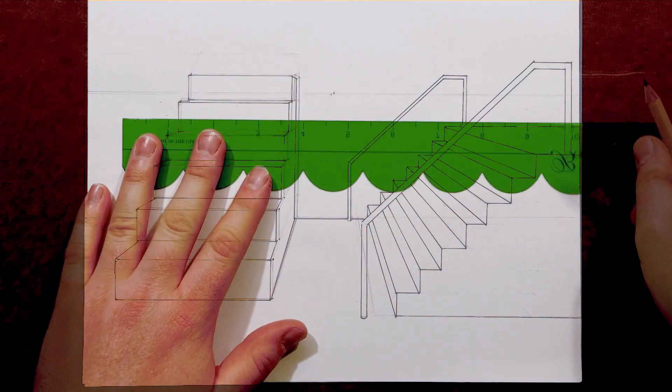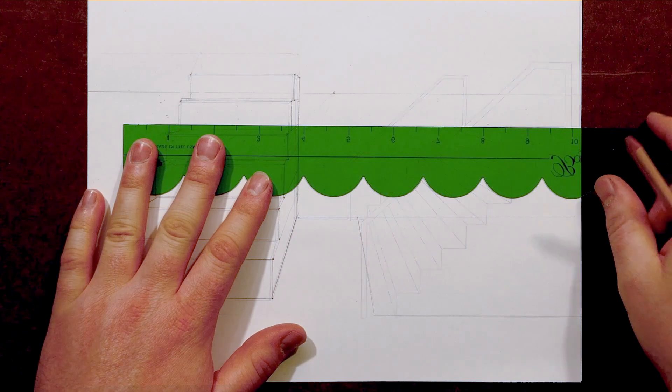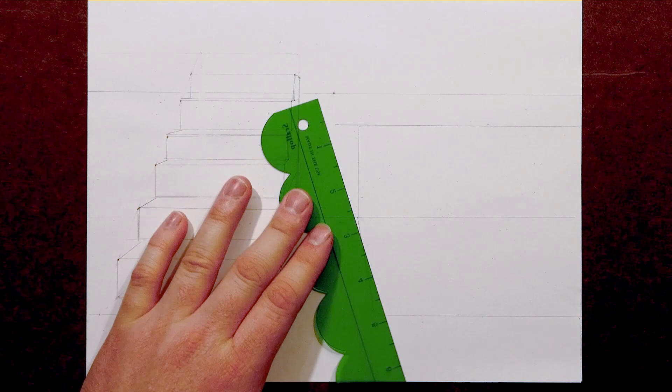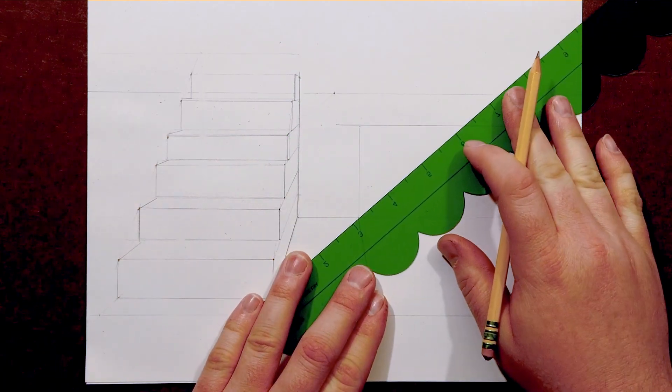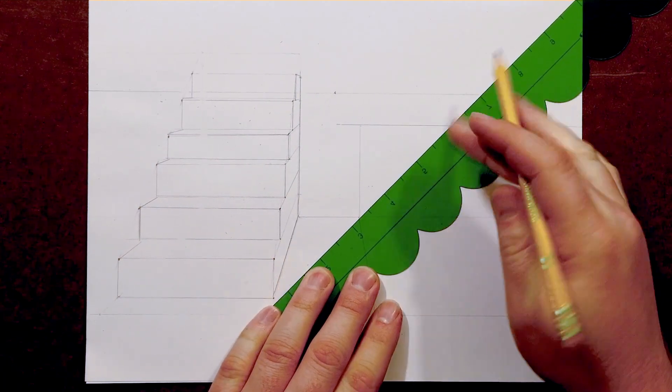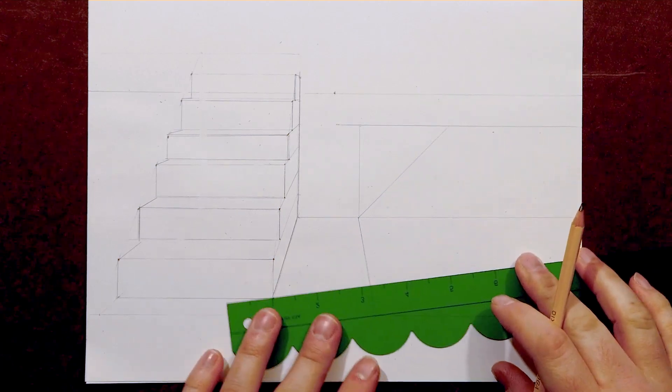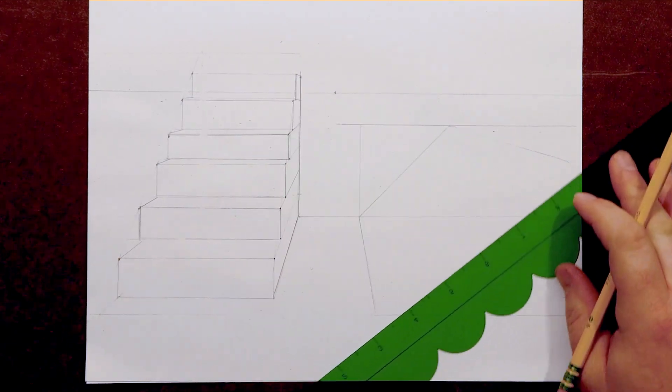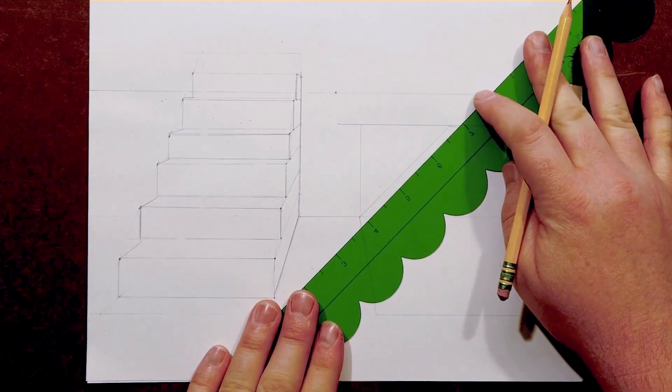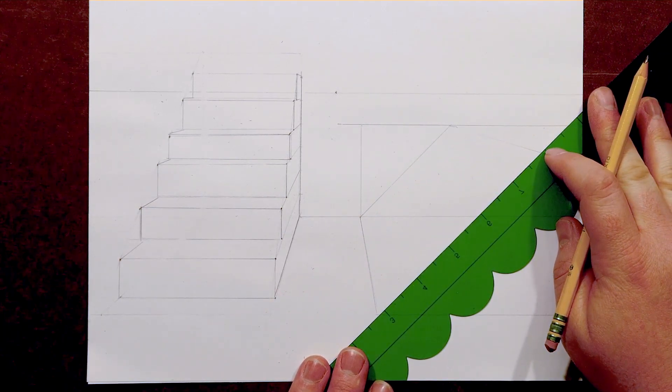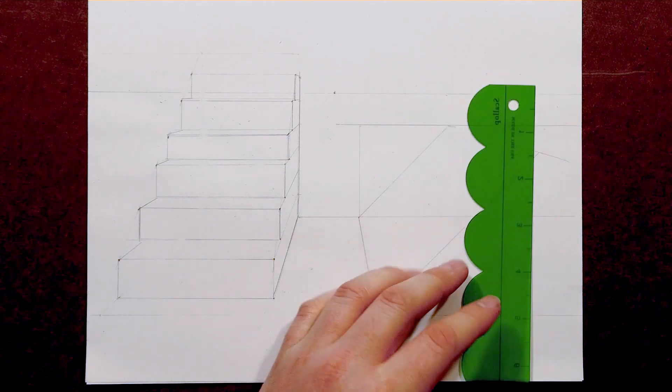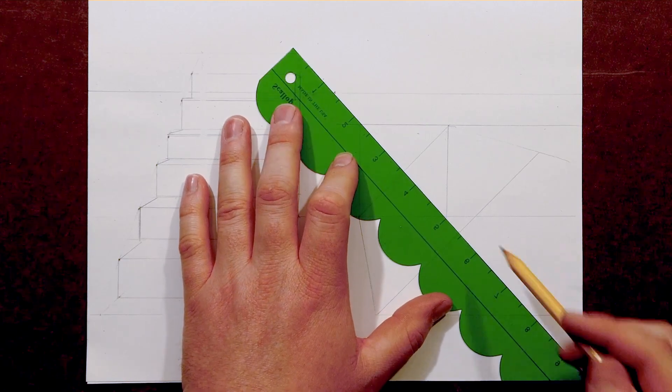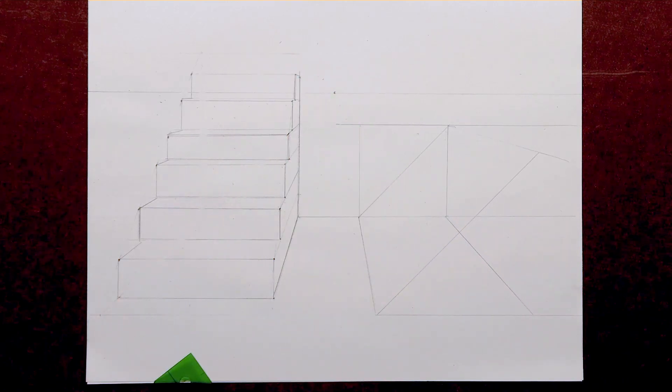With one staircase down, let's move on to the second. Let's start by using a horizontal line to define the height of this block we'll carve it out of. I'm using a line that shows the angle of the stairs, and that goes in between that front corner and the height. That intersection will allow me to pull out a converging line and then connect it with that front corner, but being sure that it's parallel to that first angle we drew.